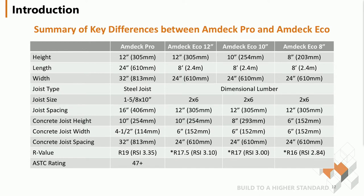This slide summarizes the key differences between the Pro and Eco systems, including joist spacing, joist sizes, and material differences. The R-value of AMDEC Eco ranges between 16 and 17.5 — these are simulated values using energy modeling software rather than laboratory-tested values. These represent effective or actual R-values which include the drywall, the concrete topping, wood joists, and air films. The nominal R-value of AMDEC Eco — just the foam — would be between 33.5 and 50 depending on thickness.